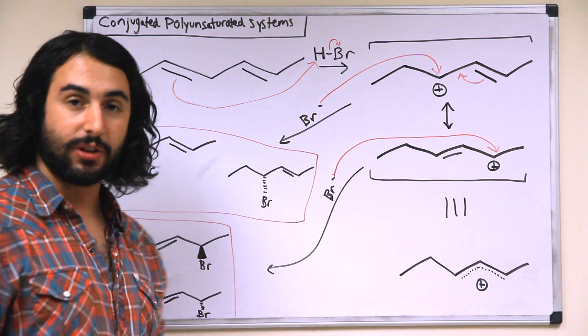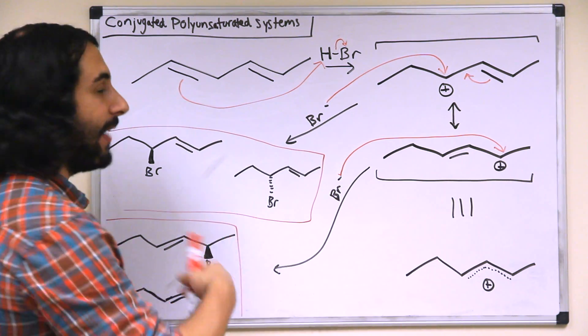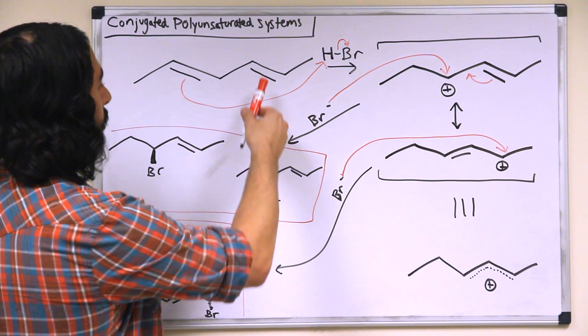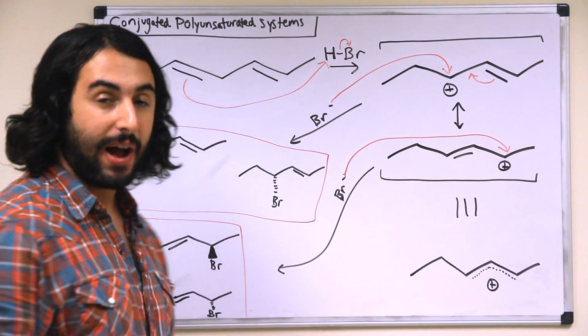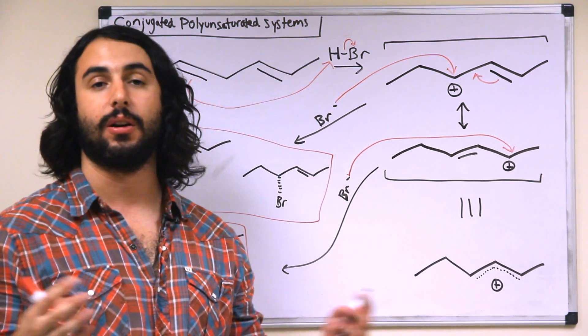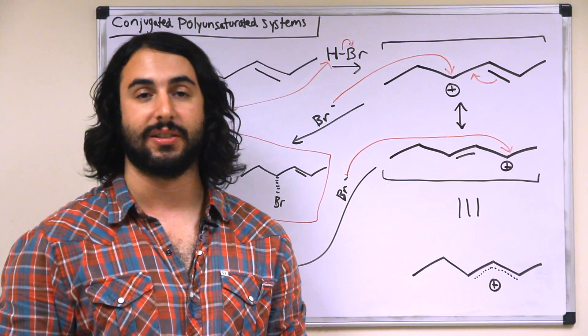And this would only be much more so the case if this were not a symmetrical molecule, because then we would have to go through this again with utilizing the other pi bond as the nucleophile. So we would have quite a greater number of products in the product mixture.